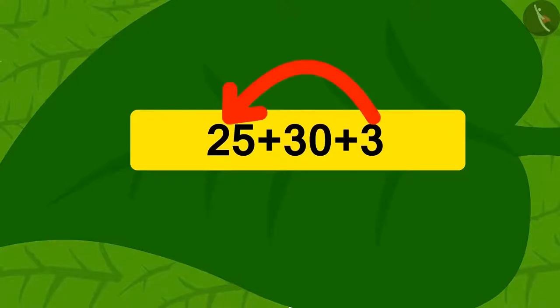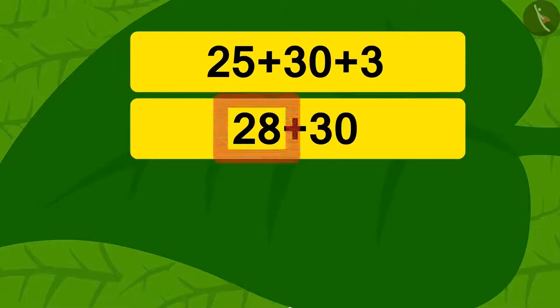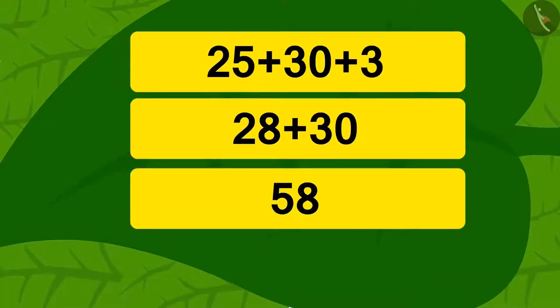First, we will add 3 to 25. We get 28. Now, if we add 28 to 30, we get 58. See? How quickly we solved it!